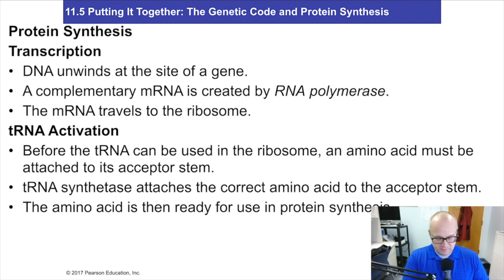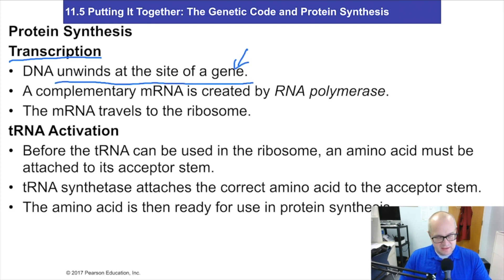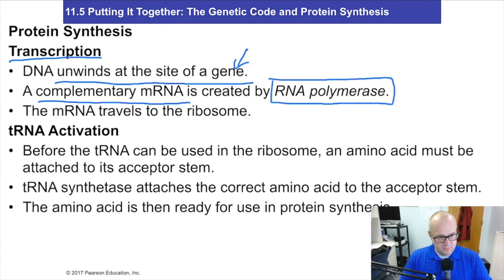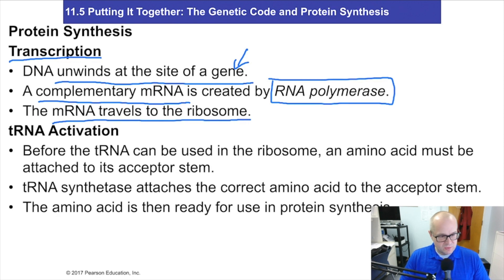Let's go through it a little bit. Here's the process: DNA will unwind at a certain site of a gene. A gene is simply a portion of DNA that encodes for a protein. The complementary messenger RNA is created by RNA polymerase. The mRNA will then travel to the ribosome, which are outside of the nucleus, and interact with it.